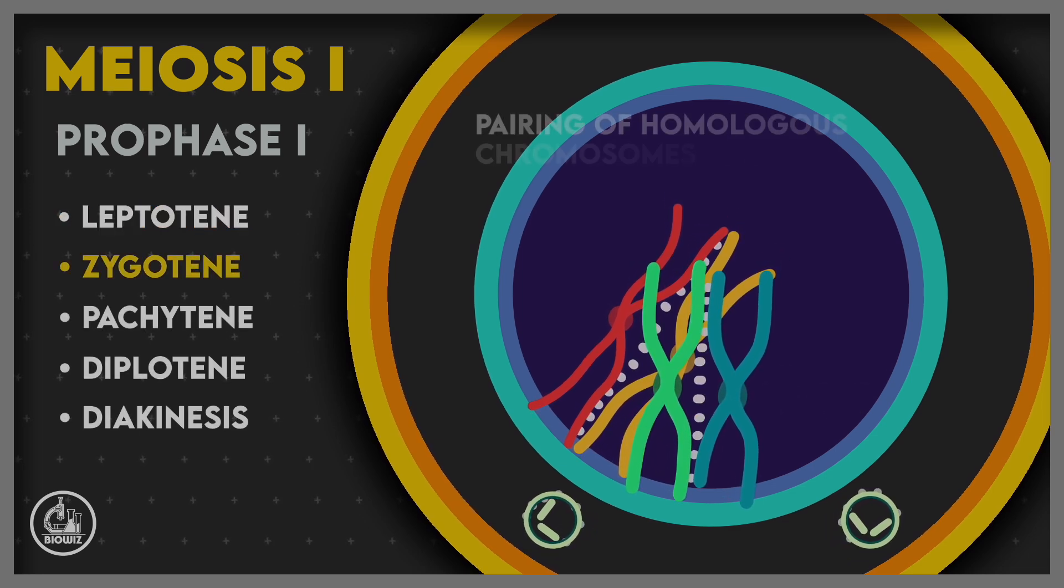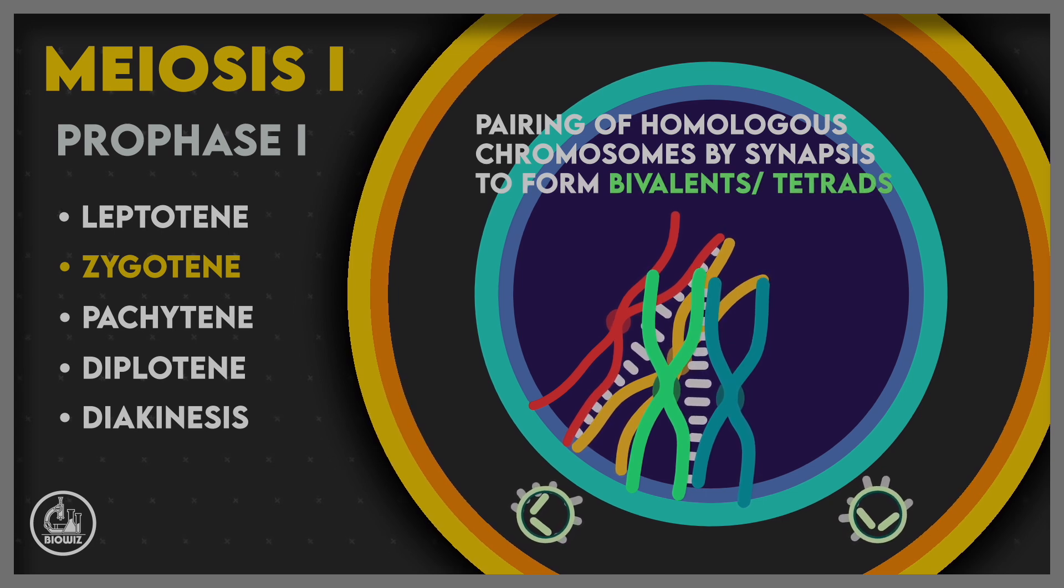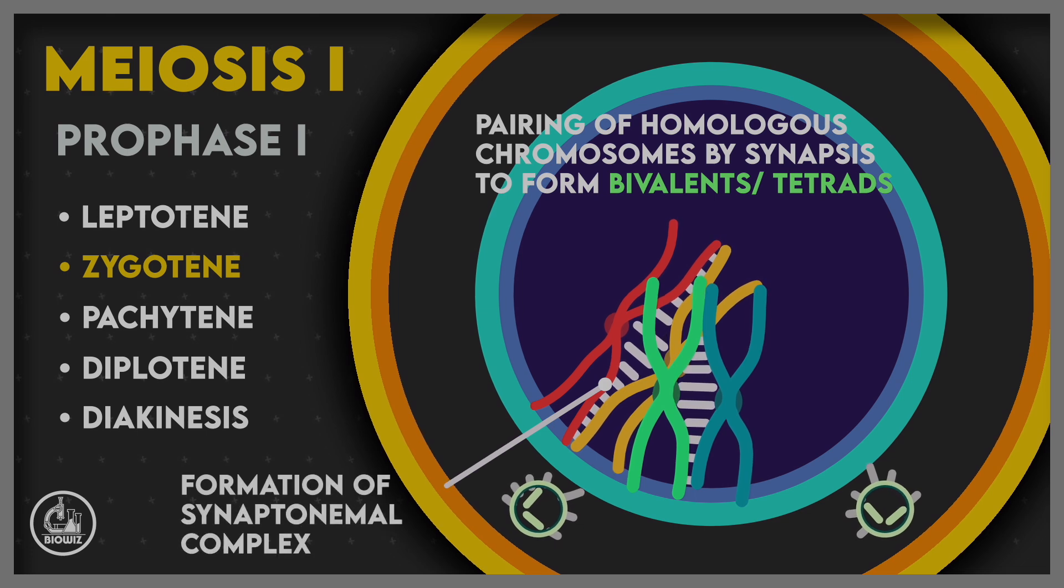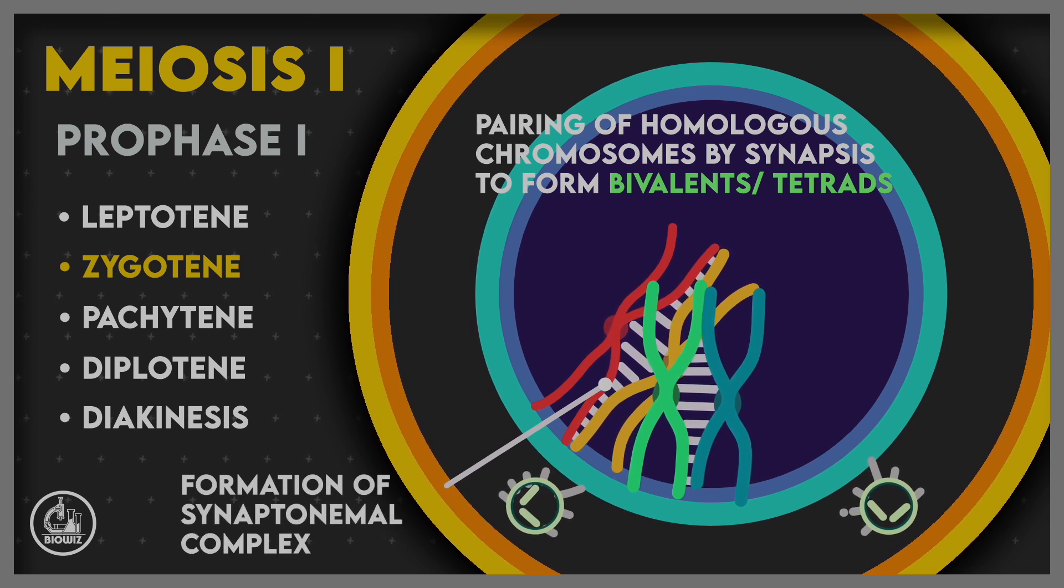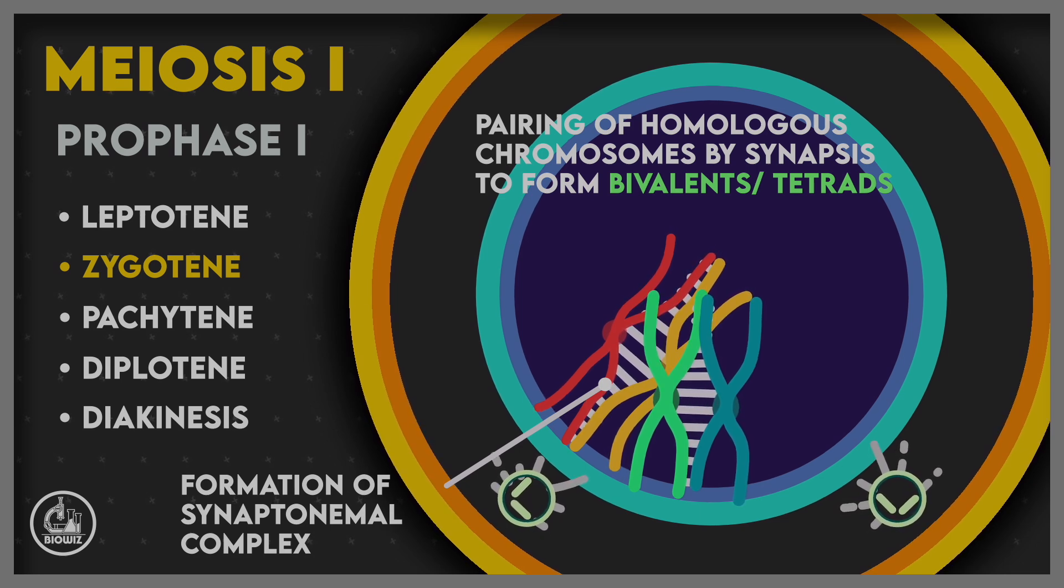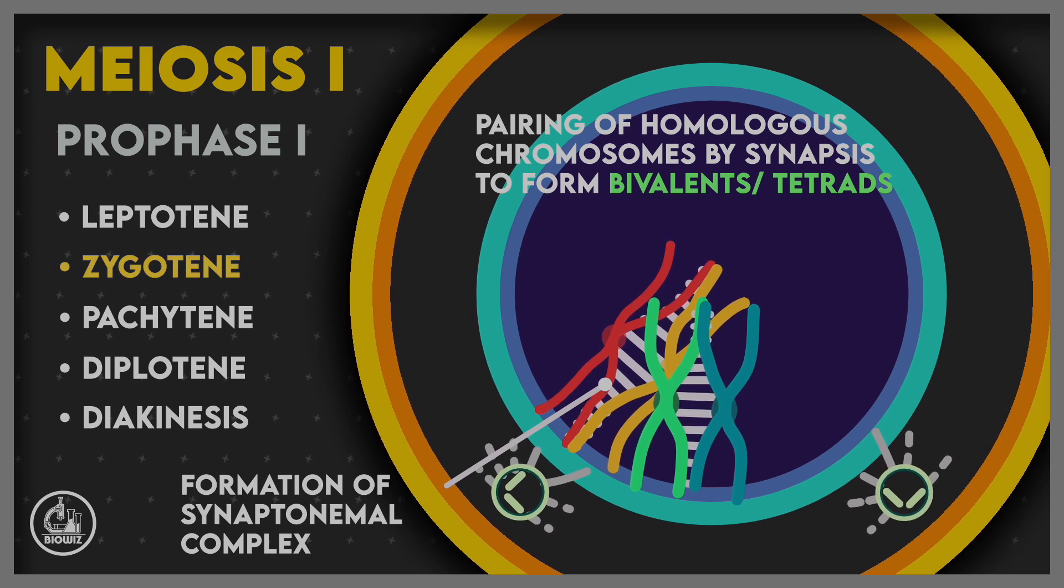In zygotene, the homologous chromosomes are paired in a process called synapsis. The paired structures thus formed are called bivalents or tetrads, as each bivalent contains four chromatids. The pairing is stabilized by formation of a nucleoprotein complex called the synaptonemal complex.